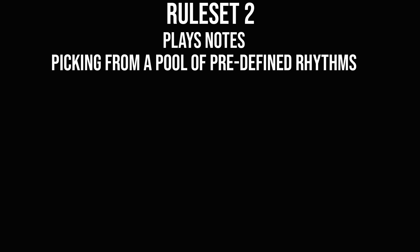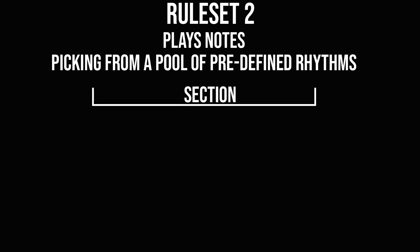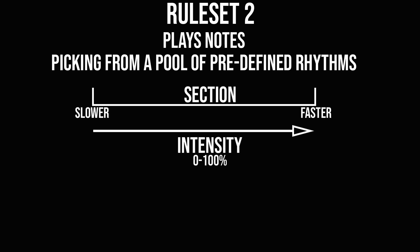Usually you want your guitarist to maybe start the solo a bit slower and then finish in an explosive fashion. So let's assign all of these rhythms an intensity value and then use that when considering which rhythms to pick. When picking from this pool of rhythms, we first calculate our own intensity value based on how close to the end of the section we are, and then compare that to the intensity values of the rhythms, calculating a weight for each rhythm, and then use that to do a weighted random pick. Now that we have our rhythm, we reuse the logic for which notes to pick from the previous ruleset, and then it sounds something like this.